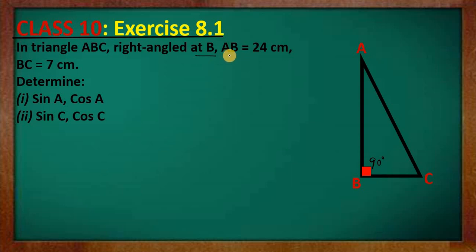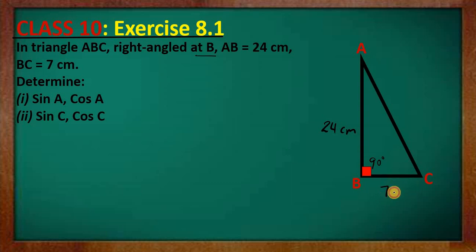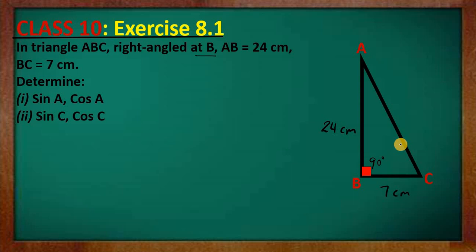AC — we're not given the measurement for that, but we're told that AB is 24 cm and side BC has a length of 7 cm. Side AC is not given; however, we can find the length of side AC using the Pythagorean theorem.